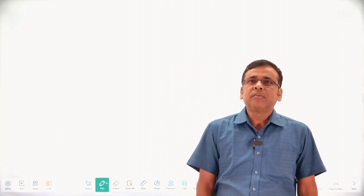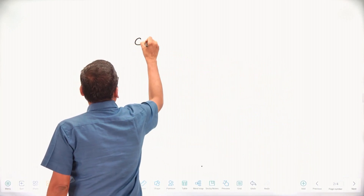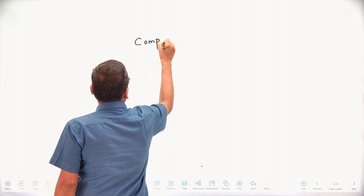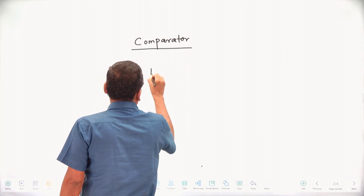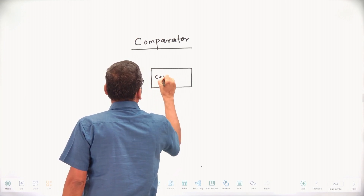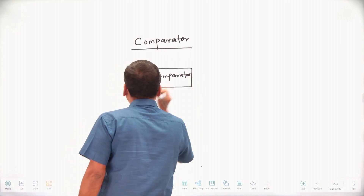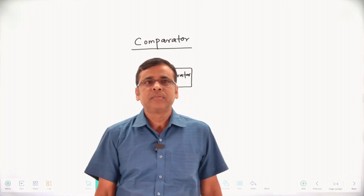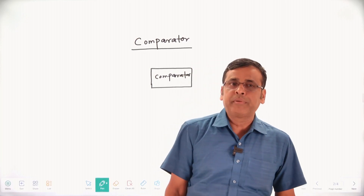Hello students, today we are going to discuss comparator. What is a comparator? A comparator will compare two bits. It may be a two-bit comparator, it may be a single-bit comparator, it may be a four-bit comparator, likewise.